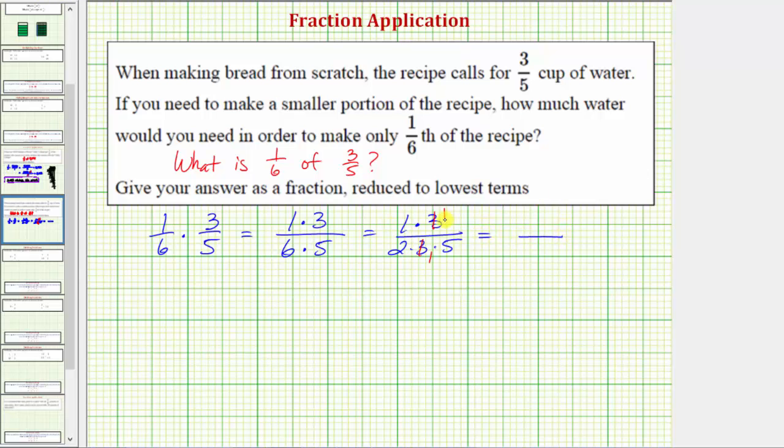So the numerator would be one times one, which is one. The denominator is two times five, which equals ten.